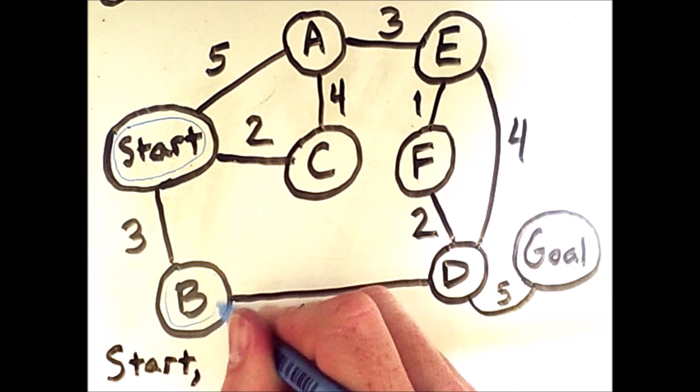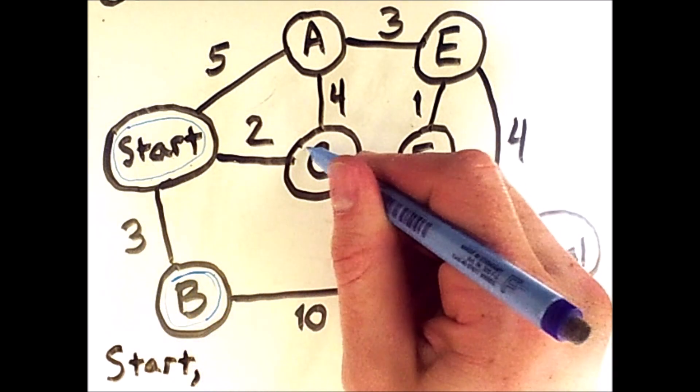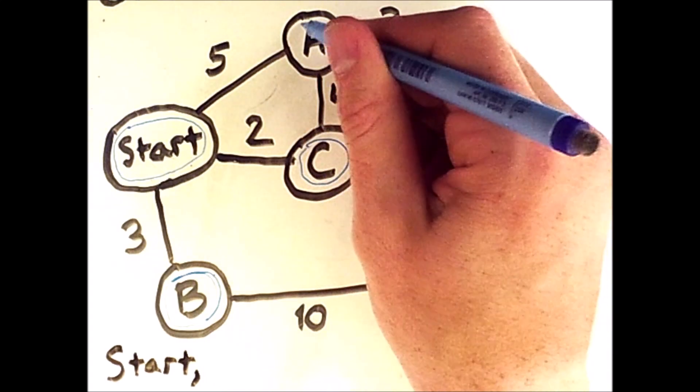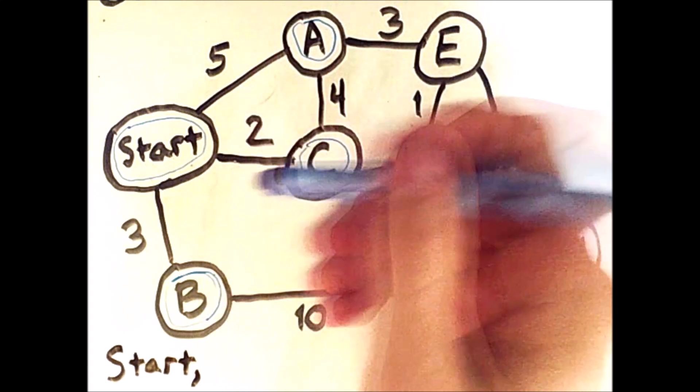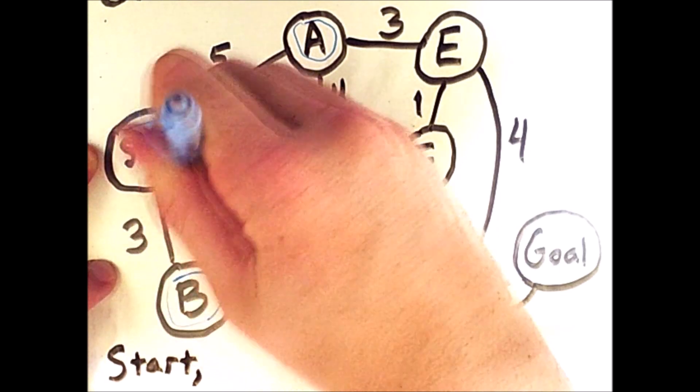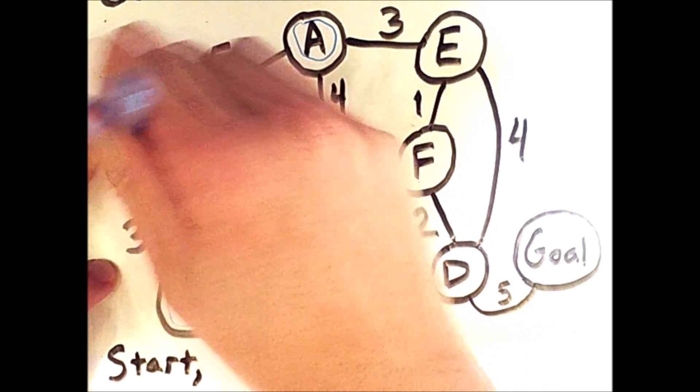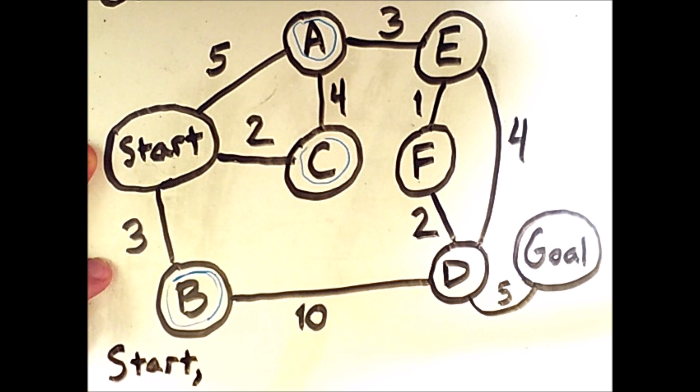So B is now on the fringe, C is on the fringe, and so is A. Because we've already visited the start state, we will remove it from the fringe, since it is in this visited set down here at the bottom.